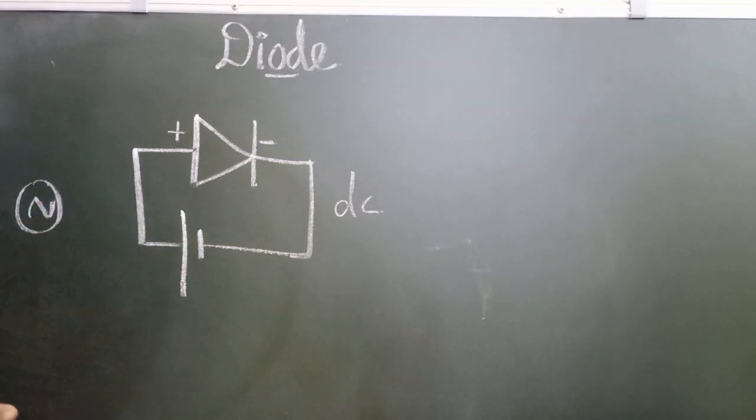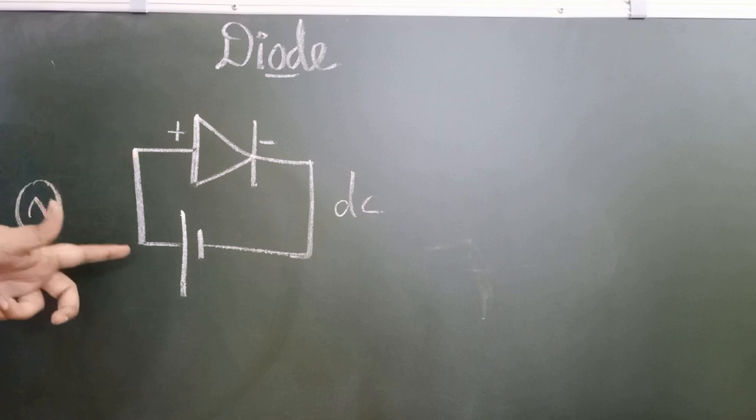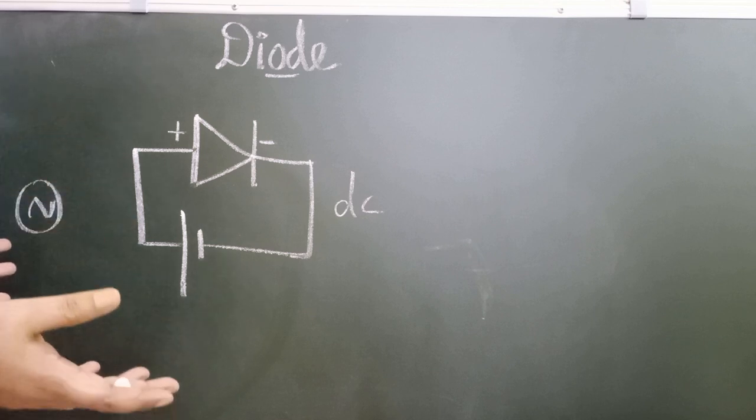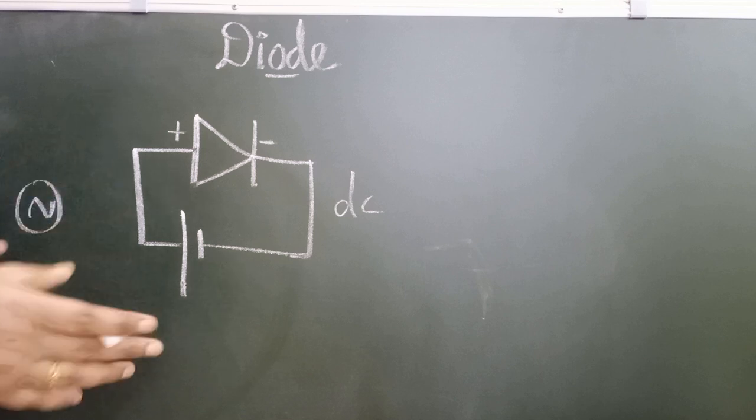Whenever it is in reverse bias, it acts as an open switch, so there is no conduction in it. That's all about the diode. Thank you.